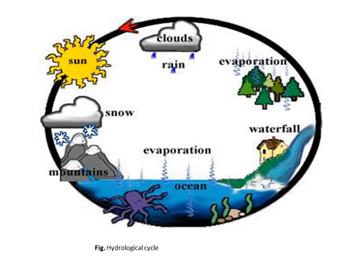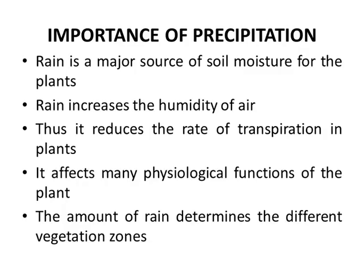Dear students, here we can see the hydrological cycle — water is changed from one form to another form. Importance of precipitation: rain is a major source of soil moisture for the plant. Rain increases the humidity of air, thus it reduces the rate of transpiration in plants.